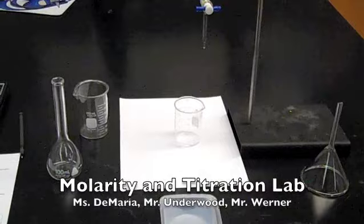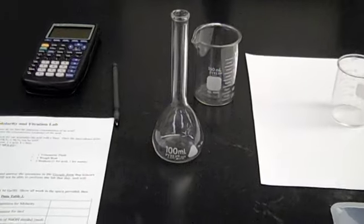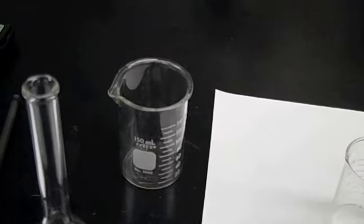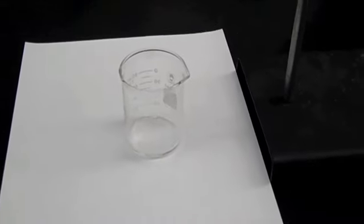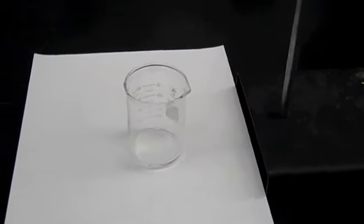For the molarity and titration lab, the supply setup you'll need is a 100 milliliter volumetric flask, two beakers - one for the waste and one for the actual titration. For the actual titration it probably doesn't have to be any bigger than a 100 milliliter flask.